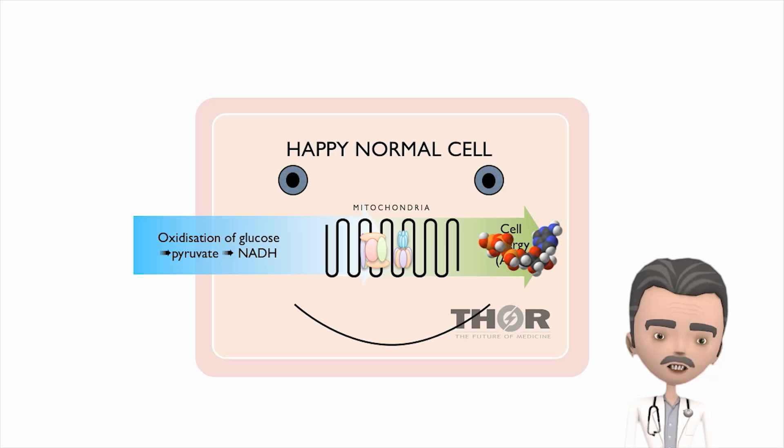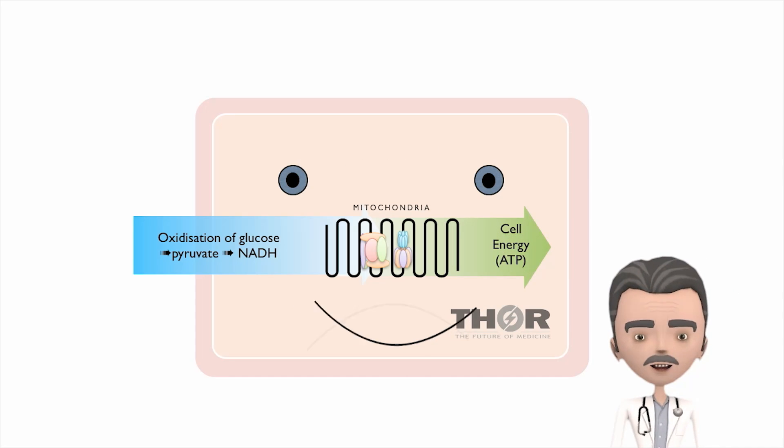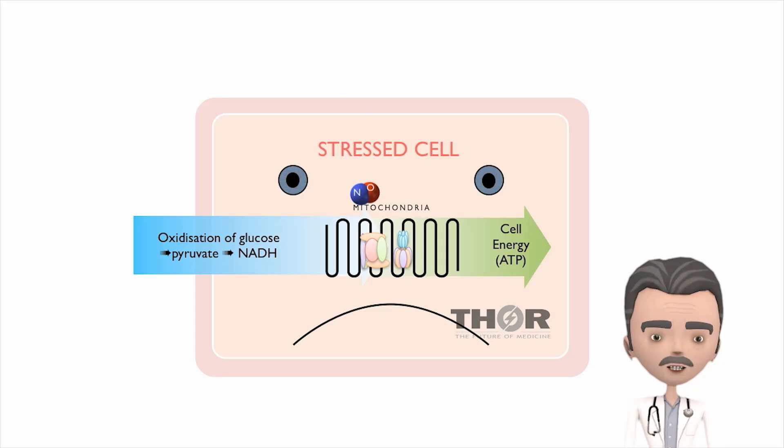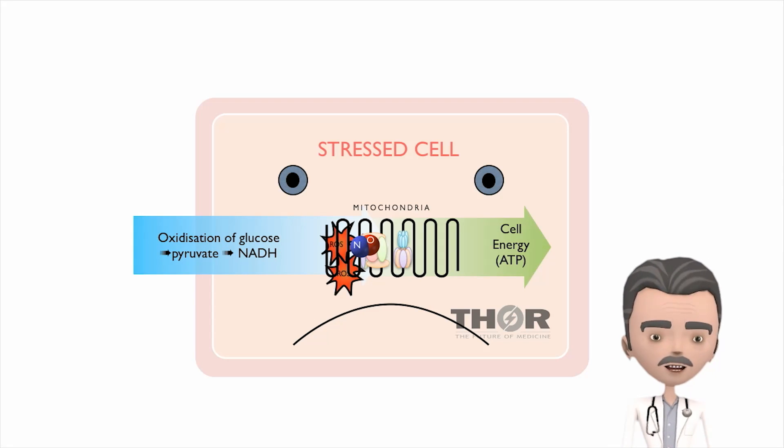But something goes wrong when we get sick, injured, stressed or just old. The mitochondria starts to make nitric oxide. The nitric oxide competes with oxygen. It binds to cytochrome C oxidase and competitively displaces the oxygen.